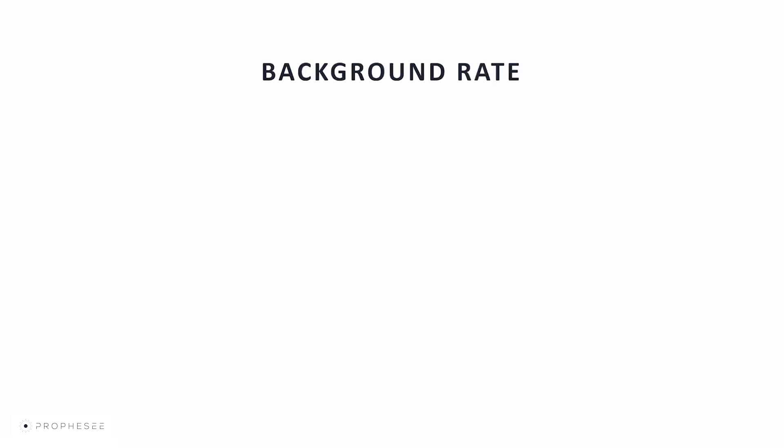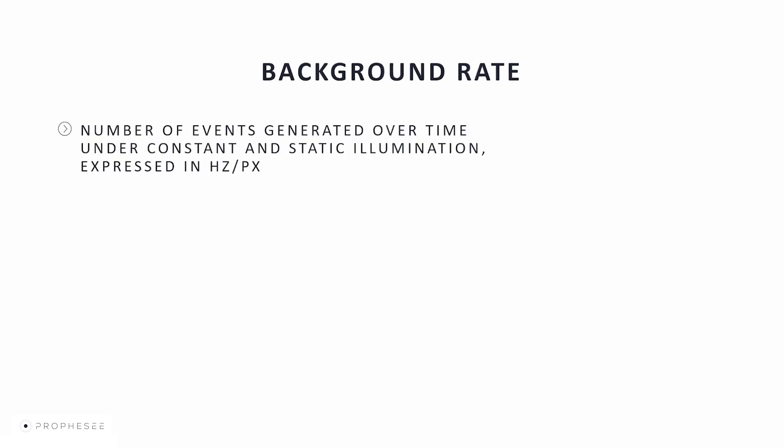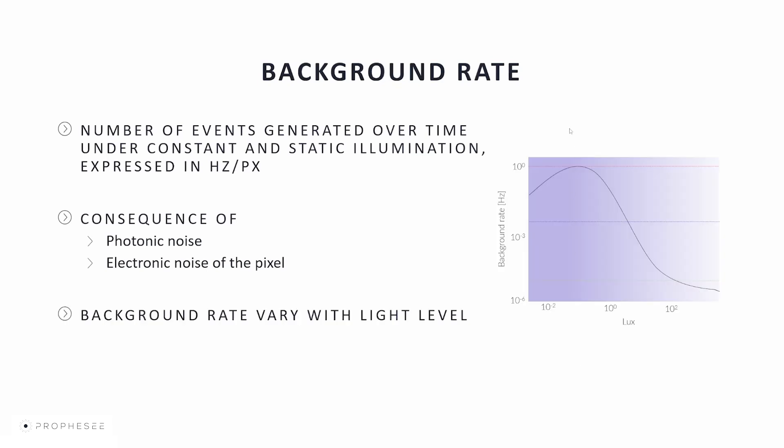Background Rate: in the absence of activity in the scene, ideally the sensor doesn't generate events. However, some events are still generated due to noise within the pixel, characterized by measuring the background rate. The background rate is defined as the average number of events generated per pixel under constant and static illumination, expressed as Hz per pixel. It is a consequence of photonic and electronic noise and varies with light level. With default sensor settings, the background rate is about 1 Hz. It can be reduced by tuning sensor biases like bias HPF and the sensitivity biases.